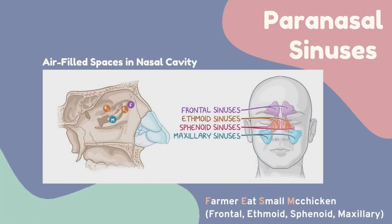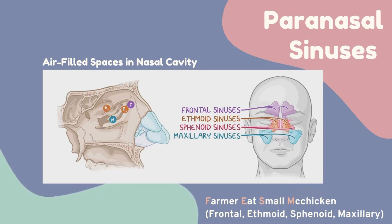Now done with the external nose and skeletal structure, let's proceed to the paranasal sinuses. Paranasal sinuses are air-filled spaces in the nasal cavity. There are four pairs: frontal, ethmoid, sphenoid and maxillary sinuses. To remember them, use the sentence: 'Farmer eat small McChicken' — frontal, ethmoid, sphenoid and maxillary sinuses.